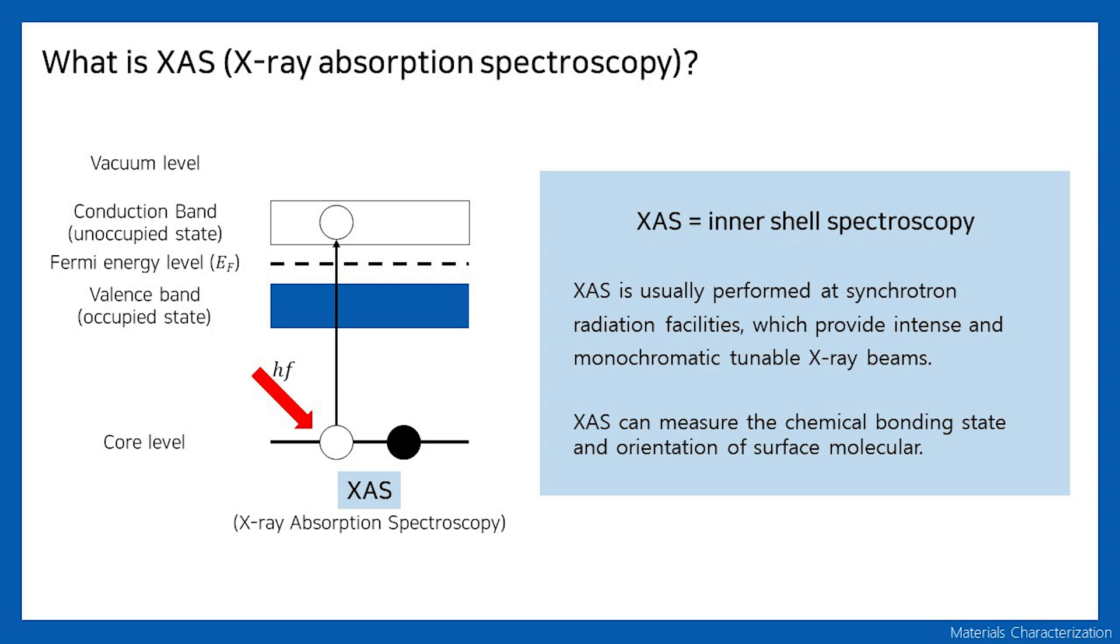A monochromatic tunable X-ray source is required to measure the absorption spectra at various wavelengths. In Korea, it can be measured through Pohang accelerators. Through X-ray absorption spectra analysis of core electrons, we can see the direction of chemical bonding and surface molecular orientation.